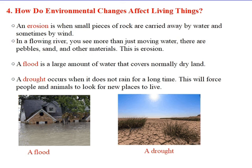Second, a flood — it's a large amount of water that covers normally dry land. We can see a flood in the first picture on the left. A drought occurs when it does not rain for a long time, forcing people and animals to look for new places to live. We can see a drought in the second picture on the right.